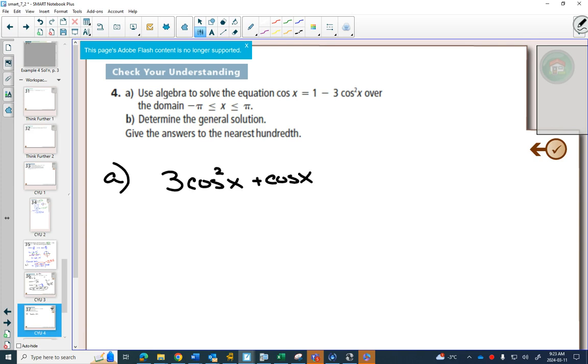So I move the -3cos²x to the left. I'm going to move the 1 also to the left-hand side to make one side equal to 0.